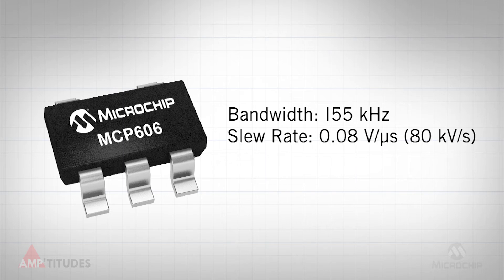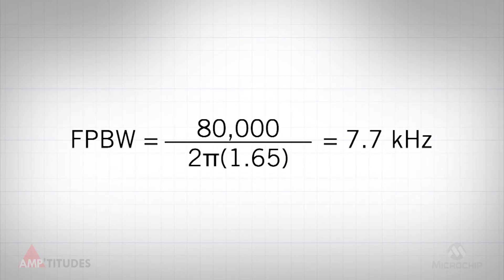The typical slew rate of the MCP606 is specified as 0.08 volts per microsecond, or 80,000 volts per second. Plugging these values into the equation for full power bandwidth, we determined that the bandwidth is only 7.7 kHz.